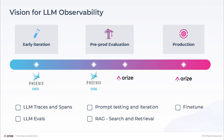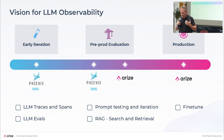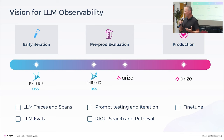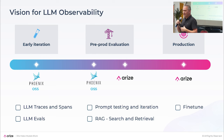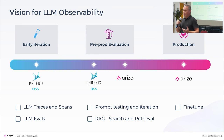So LLM observability — we're an observability company, which means software to help you troubleshoot, debug, analyze, and evaluate your systems. On the right side of this is our enterprise platform, which is probably used by like half of the top ML teams in the world — think of Ubers or Etsys, top enterprises. And on the left side, we have a growing open source solution called Phoenix. We're going to go through a little bit of both of these today.